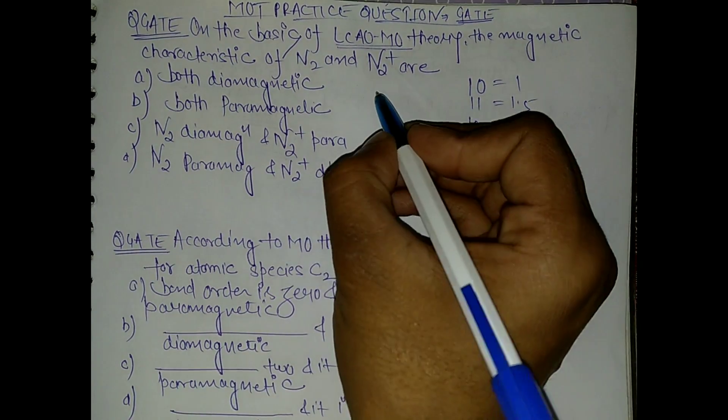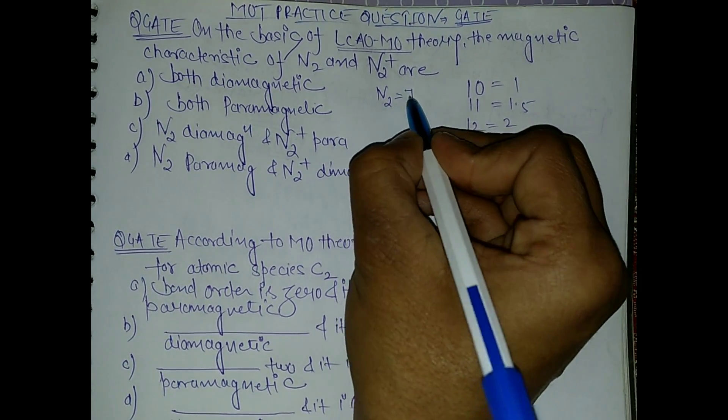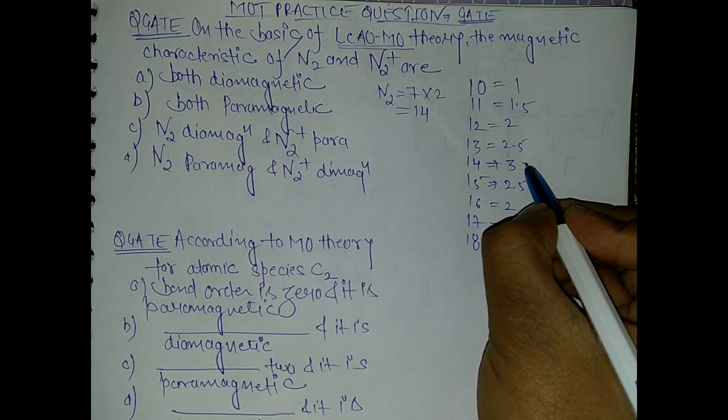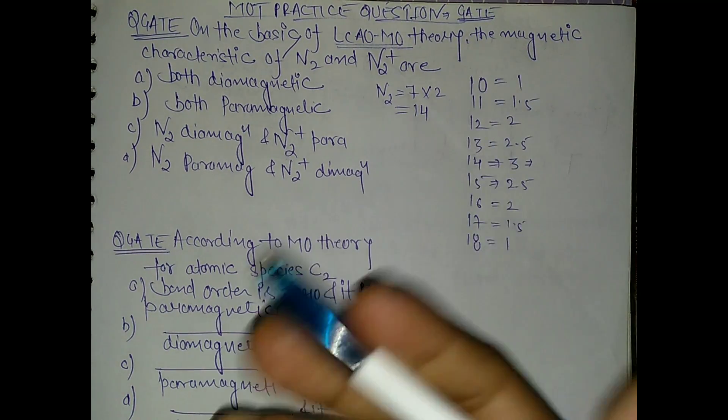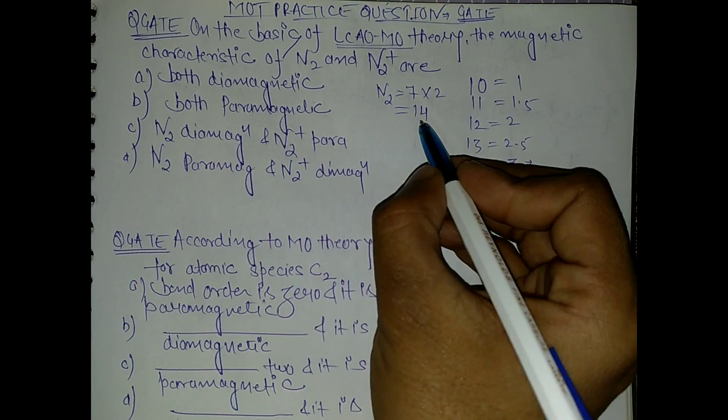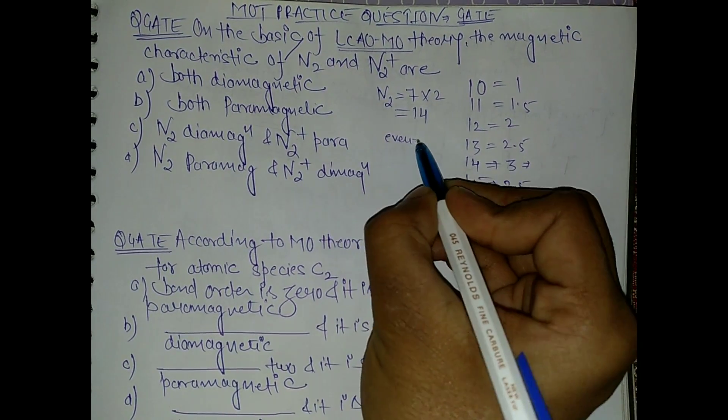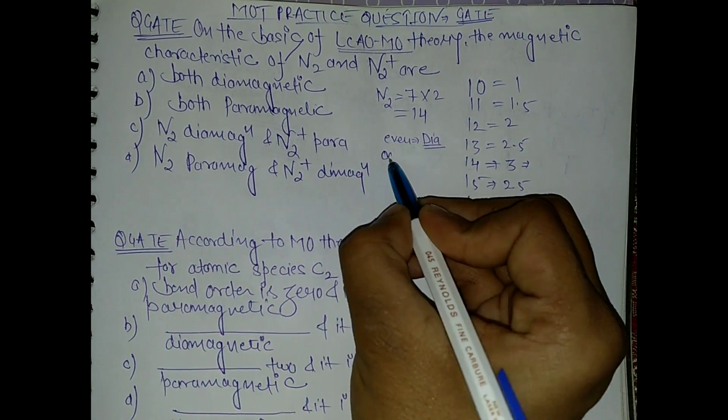Now see, N2 - take the total electrons. This is 7, so 7 into 2 is 14. And 14 means we have 3, so the bond order is 3. And for paramagnetic and diamagnetism, I said that if we have the even number then we have diamagnetic, and if we have odd number then we have paramagnetic.